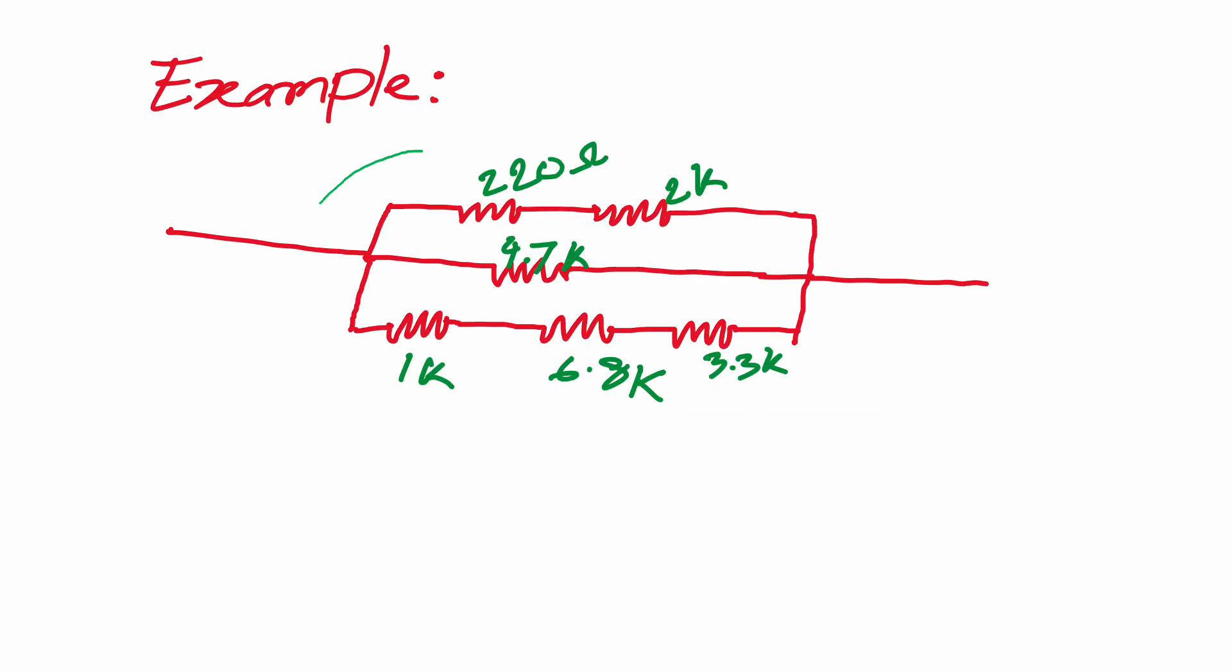So our total resistance R we have found is 6.43 ohm. So that's how we can calculate the series and parallel combinations of resistors.